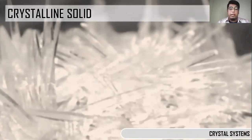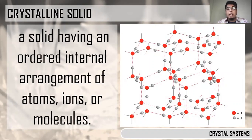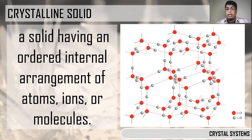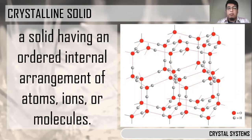How do we define crystalline solids? These are solids having an ordered internal arrangement of atoms, ions, or molecules. For example, as you can see on screen, that is solid water — the red balls represent oxygen and the gray ones are hydrogen. The arrangement of ice forms a crystalline solid, which has repeating patterns.